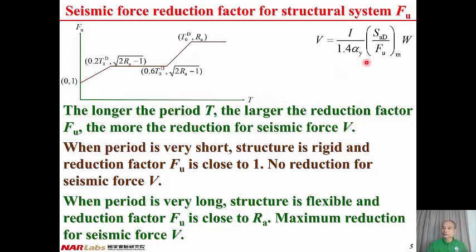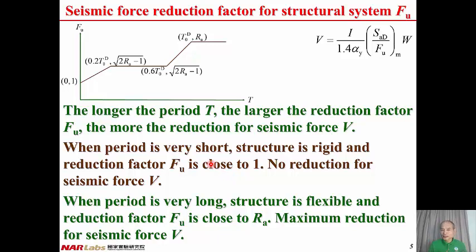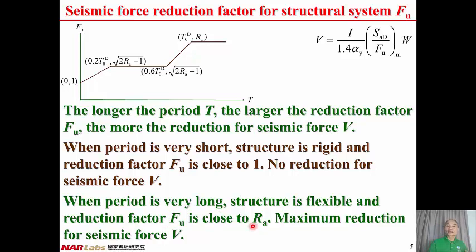When the vibration period is very short, close to zero, the structure is very rigid, and the reduction factor FU is close to 1. Because once the structure is very rigid, there will be no deformation, and ductility cannot be developed. Therefore, no reduction is applied to the seismic force — FU equals 1. When the period is very long, the structure is flexible, deformation occurs, and ductility can be fully developed. Therefore, FU is close to Ra, giving maximum reduction for the seismic force V.